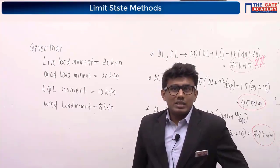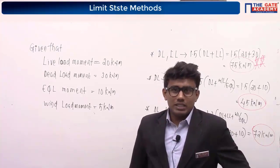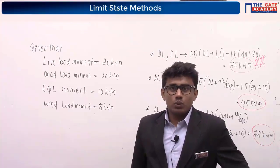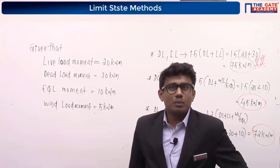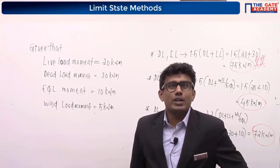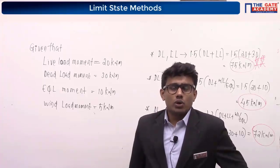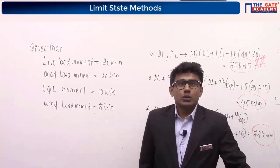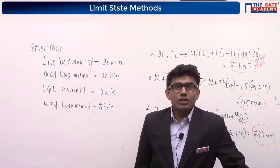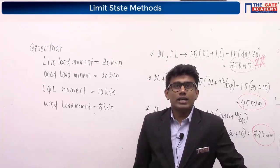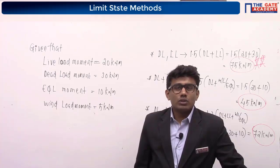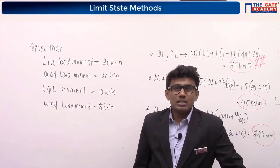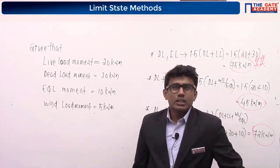For limit state of serviceability, the partial safety factors are 1, 1, 1 for DL+LL; 1, 0.8 for DL+WL; and 0.8, 0.8, 0.8 for all three. You cannot take your code book to the examination hall, so you must remember these values.